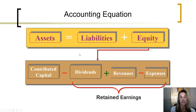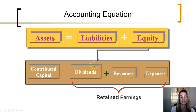Looking at the expanded accounting equation, we can see that the company's assets equal its liabilities plus equity. Equity is comprised of contributed capital, or amounts that owners have invested into the company, plus profits — revenues minus expenses — less any dividends that have been paid, which together combine to make retained earnings. So equity is a combination of owner investments and earnings retained in the corporation.